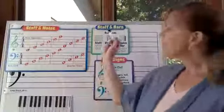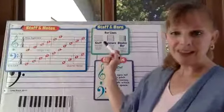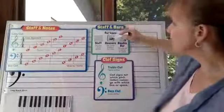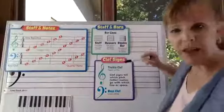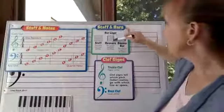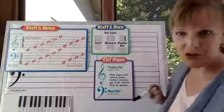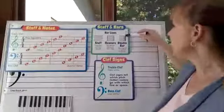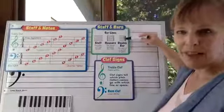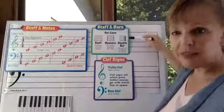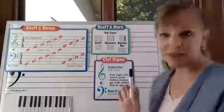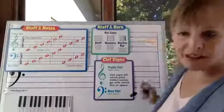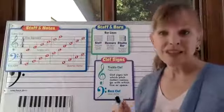The staff is divided up into measures using bar lines. So the bar lines are straight down, and that makes a measure. At the end of the piece of music, you will see what's called a double bar line. If the very last one is really thick, you know that it's the absolute end of the piece. If it's just two bar lines that are the same thickness, then it's just the end of a section.